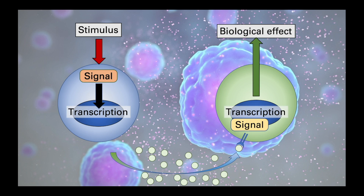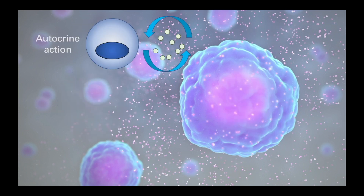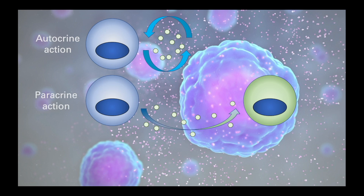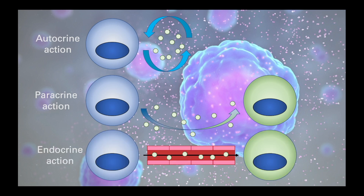Cytokine action can be autocrine, paracrine, or endocrine. In an autocrine response, the cytokines are released and then act back on the same cell, as they express the appropriate receptor. A more classical response is the paracrine action, where cytokines are released from one cell and then act on a second cell, eliciting a response in that target cell. Finally, in an endocrine response, cytokines are released in very large quantities, enter the circulation, and are carried to different organs in the body where they have a systemic effect.